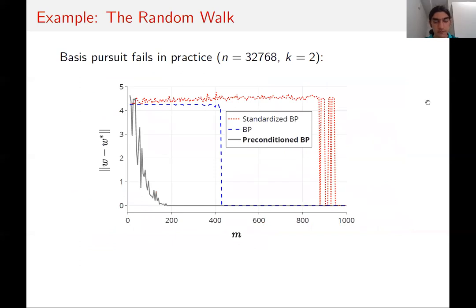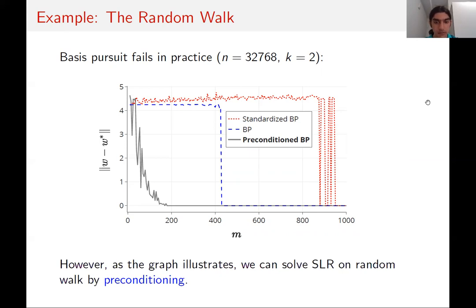Basis pursuit also fails in practice—it's not just a limitation of what we've been able to prove. The blue line plots the error of basis pursuit as we increase the number of samples for a simple random walk example recovering a 2-sparse signal. The red line is a slight variant normalizing the variances of the covariates to one. Neither performs well; they require more than 400 samples. However, as the gray line illustrates, we can solve this problem with much lower sample complexity by a preconditioning approach.